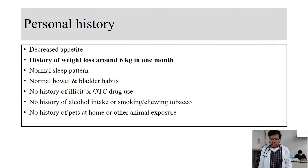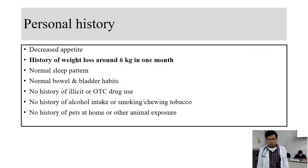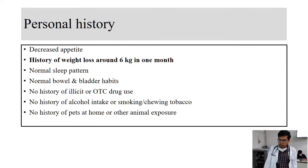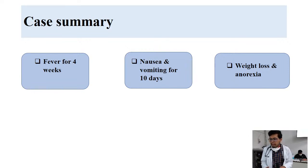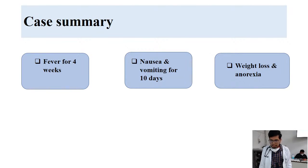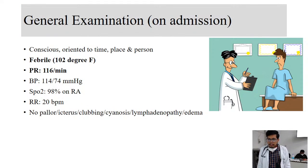Among personal history, the patient complained of decreased appetite since the onset of fever, with significant weight loss of around 6 kg in one month. Sleep pattern, bowel, and bladder habits were normal. No history of illicit or over-the-counter drug use, smoking, alcohol, pets, or animal exposure. Summarizing: the patient had fever for four weeks with nausea, vomiting, significant weight loss, and anorexia — making it difficult to localize the cause of fever from history alone.